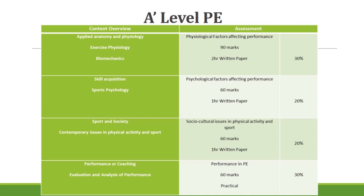Back to the content overview, component three covers sport and society and contemporary issues in physical activity and sport. The paper is called Socio-Cultural Issues in Physical Activity and Sport. It's worth 60 marks, a one-hour written paper, and also worth 20% of the overall qualification mark.